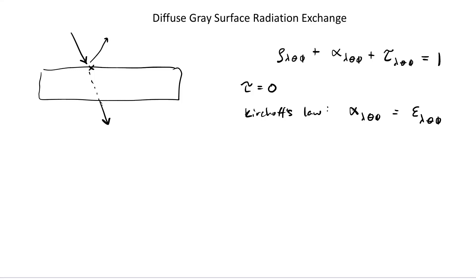We normally assume at least that α_λ equals ε_λ. And if we're making the gray assumption — if it's a gray body — then we can say α equals ε overall.